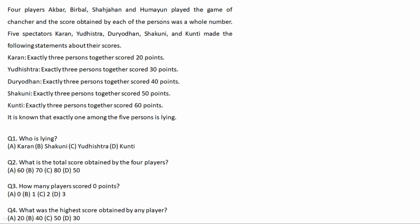The 4 players — Akbar, Birbal, Shahjahan, and Humayun — played the game of Chanchar, and the score obtained by each person was a whole number. There are 5 spectators: Karan, Yuzischar, Duryodhan, Shakuni, and Kunti, who made the following statements about their scores. Karan says exactly 3 persons together scored 20 points; Yuzischar says exactly 3 persons together scored 30 points; Duryodhan, Shakuni, and Kunti also each make statements about 3 persons.